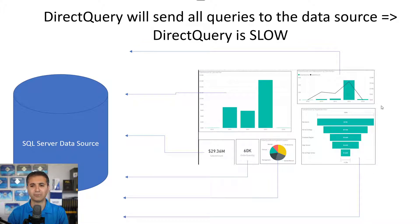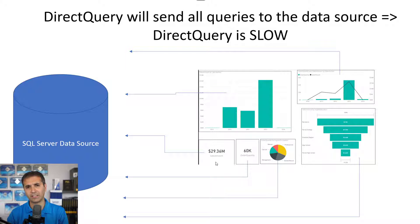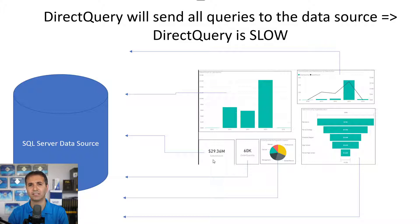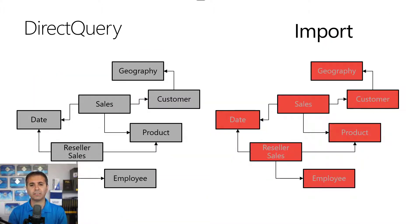Imagine a Power BI report with six different visualizations connected to a data source in Direct Query mode — the result is slow. Every one of those visuals sends a query to the data source, so it sends six queries. Imagine a database table with a trillion rows of data — it will be really slow to return something.